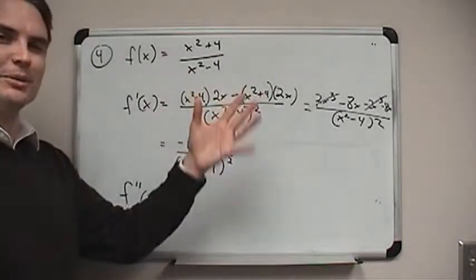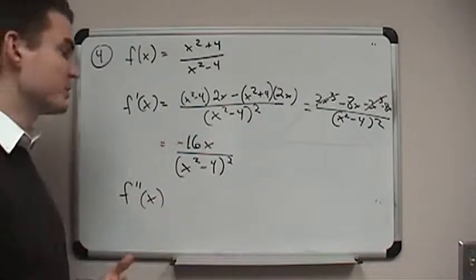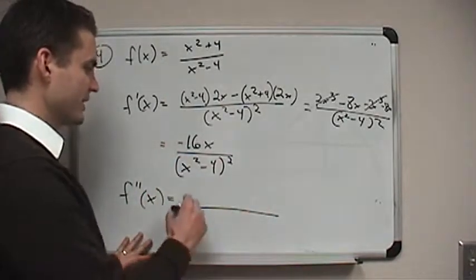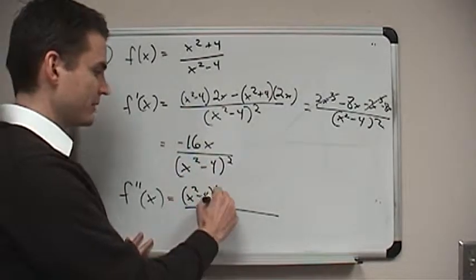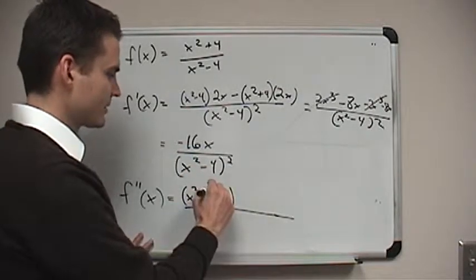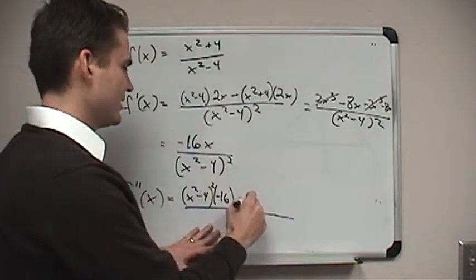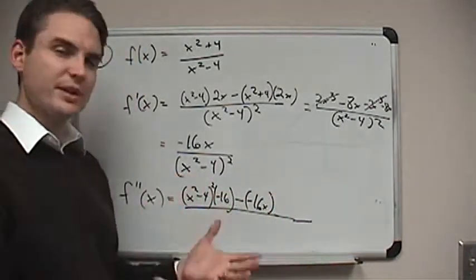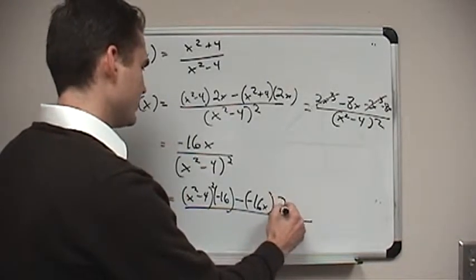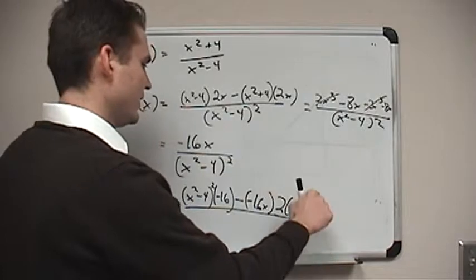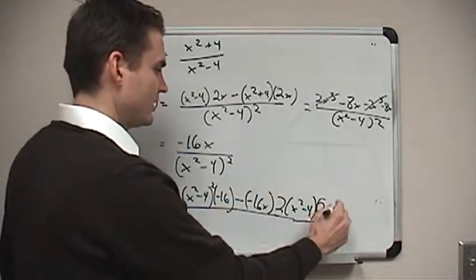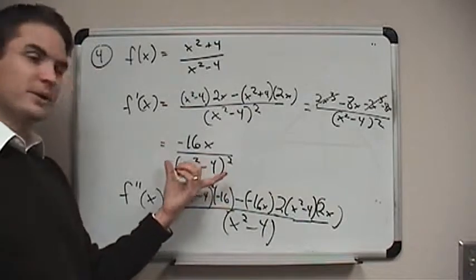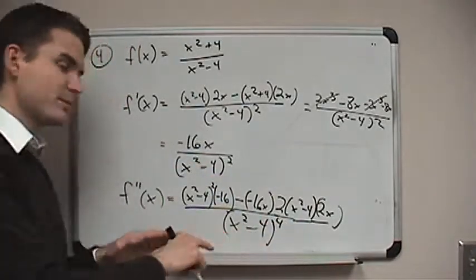I could have picked one where the function was a polynomial and we could get the second derivative really quickly, but it's good to do with some of these tougher ones sometimes. For the second derivative, we can use the quotient rule again. The quotient rule tells me to take the denominator times the derivative of the numerator, which is negative 16, minus the numerator times the derivative of the denominator. For that I have to use the generalized power rule: 2 times (x squared minus 4) to the power of 1, times the derivative of x squared minus 4, which is 2x — all over (x squared minus 4) squared, giving us (x squared minus 4) to the fourth power in the denominator.